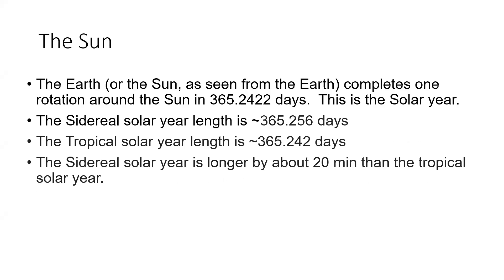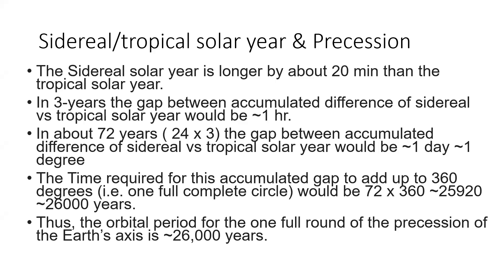Let's begin with the delta between the length of the sidereal solar year and the tropical solar year — it is about 20 minutes. So that means in three years the accumulated difference between the sidereal years and the tropical solar years would amount to one hour and 20 minutes per year; three times that would be 60 minutes, which is one hour.